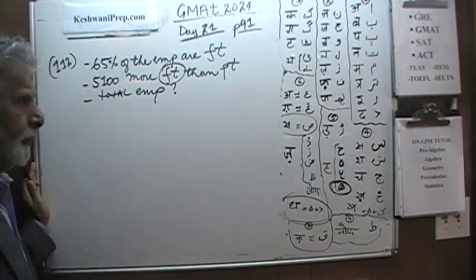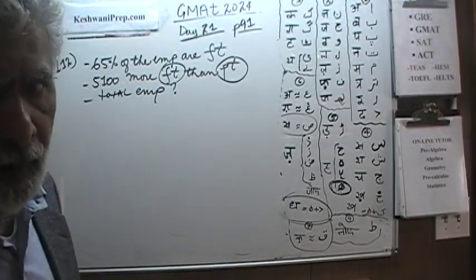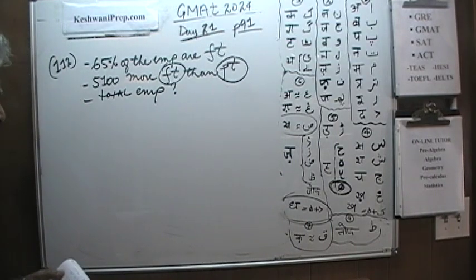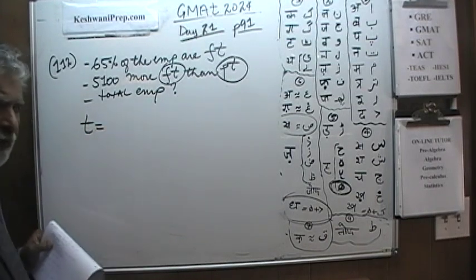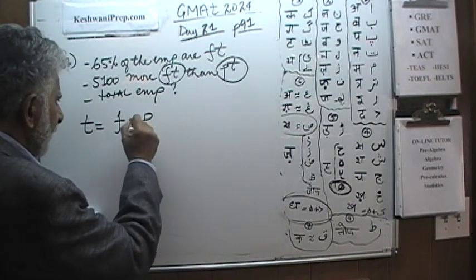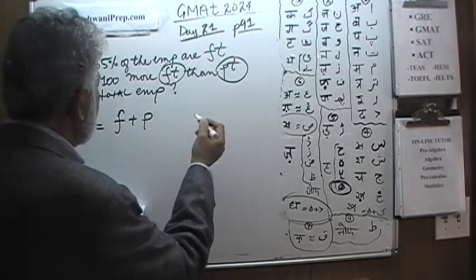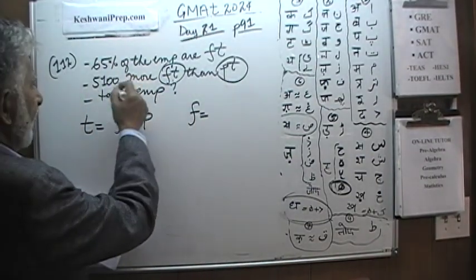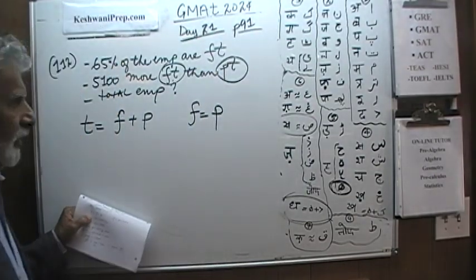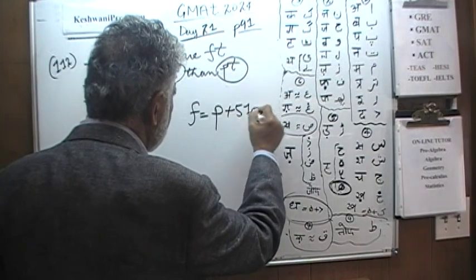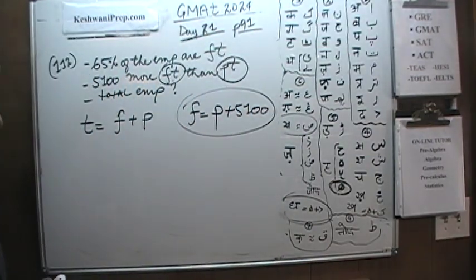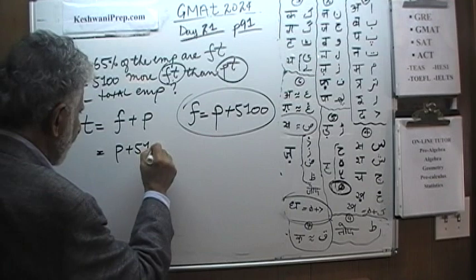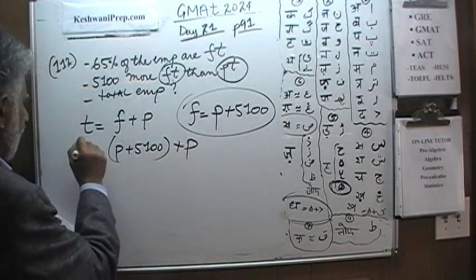Since we have two unknowns, we need two independent equations. The first equation is very straightforward, very logical. The total number of employees that we have has to add up to the full-time people and the part-time people. But they go on to tell us that the number of full-time people that we have is 5,100 more than part-time. So if we have p number of part-time people, if we were to add 5,100 to it, that will give us the number of full-time people. Let's put this equation in here, so full-time people is p plus 5,100 plus the part-time and that is full-time.